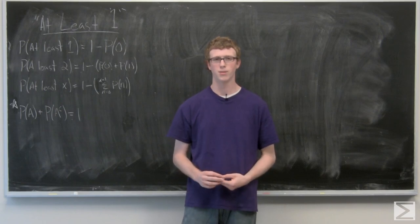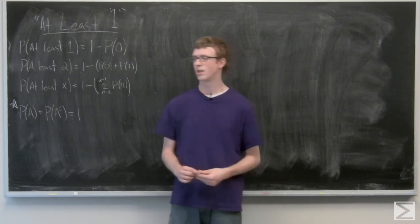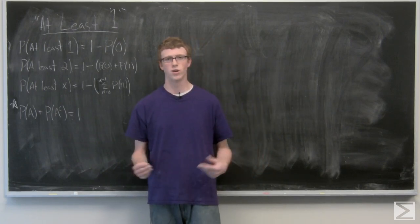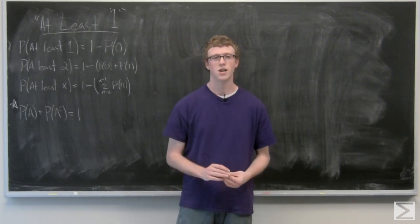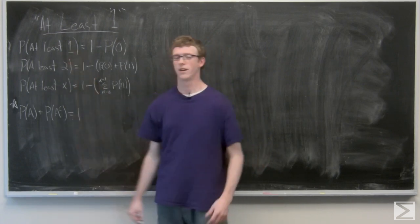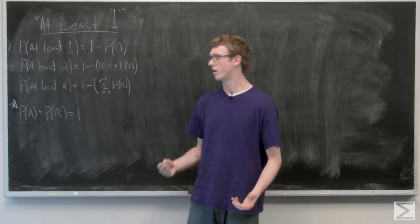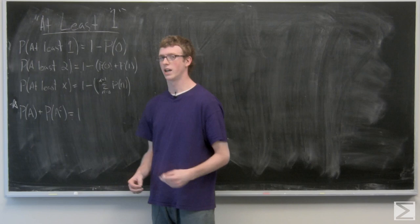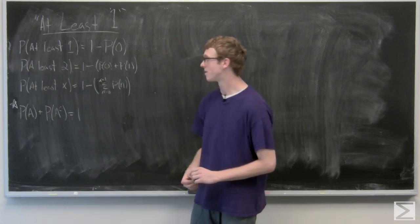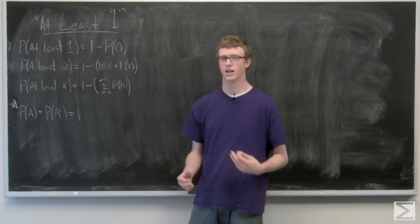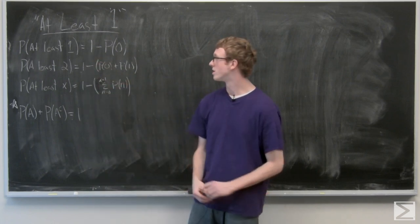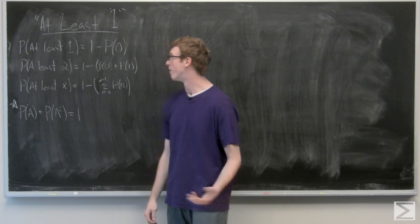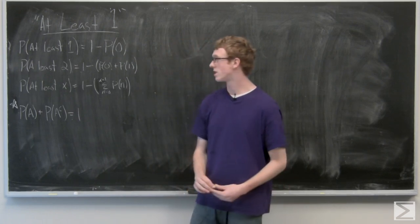One of the things that we're going to be often asked to calculate is the probability that at least one or at least X amount of one event occurs. The probability that we get at least one success is equal to one minus the probability that we get no successes.